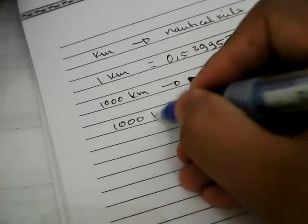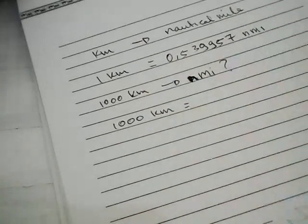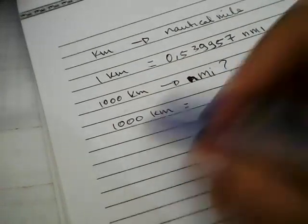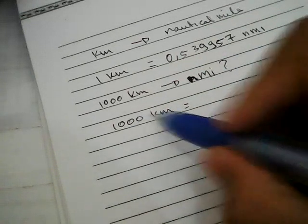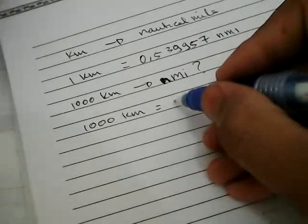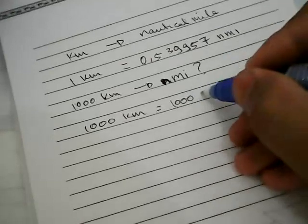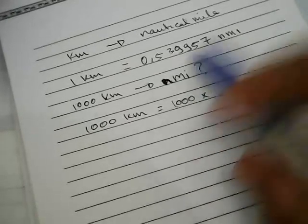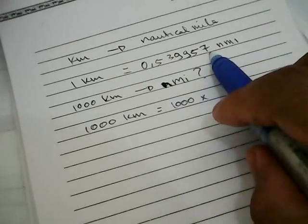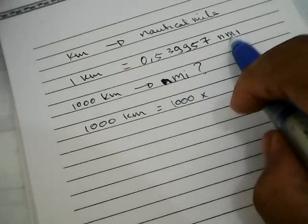Now we need to write this 1,000 again and give it an equal sign. We need to write this 1,000 again over here. I need to multiply 1,000 with this number to convert kilometer into nautical mile.